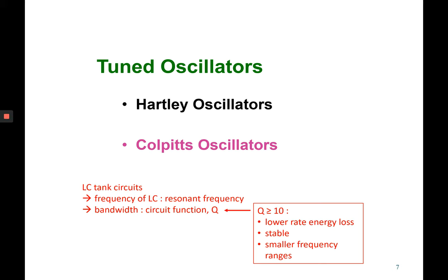Next is tuned oscillator. It has two types: Hartley oscillators and Colpitts oscillators. For tuned oscillators, it uses LC tank circuit. When we say LC, that means it uses coil and capacitor. The frequency of LC tank circuit is known as resonant frequency, and the bandwidth of this circuit is known as circuit function or Q. When the Q value is more than 10, it has lower rate energy loss, stable with smaller frequency range.